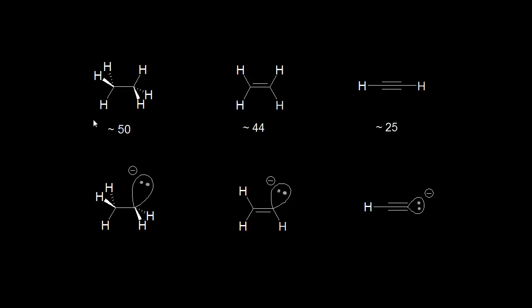Hybridization can have a large effect on the stabilization of a conjugate base. Starting with ethane, we know the hybridization of this carbon — this carbon is sp3 hybridized.